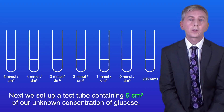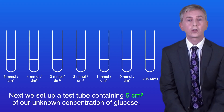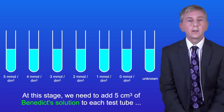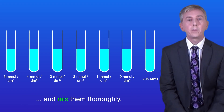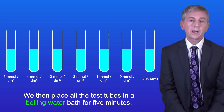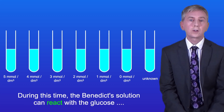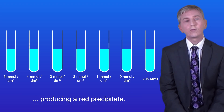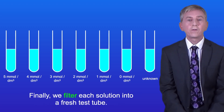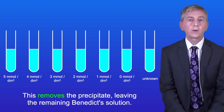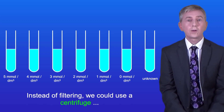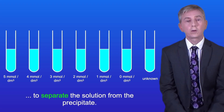Next we set up a test tube containing 5 centimeters cubed of our unknown concentration of glucose. We then add 5 centimeters cubed of Benedict's solution to each test tube and mix them thoroughly. We then place all the test tubes in a boiling water bath for 5 minutes. During this time the Benedict's solution reacts with the glucose, producing a red precipitate. Finally we filter each solution into a fresh test tube, which removes the precipitate leaving the remaining Benedict's solution.